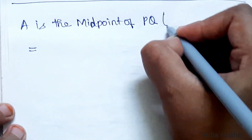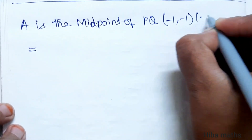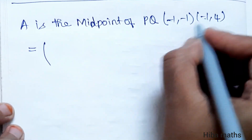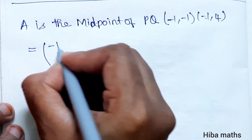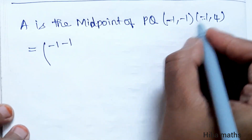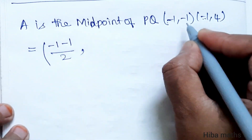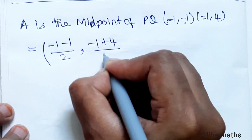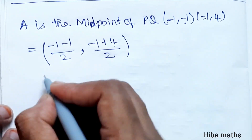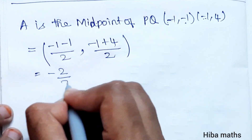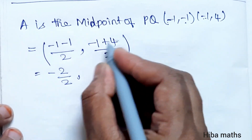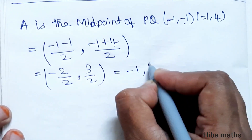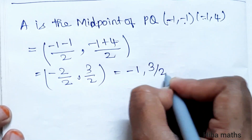PQ: P is (-1, -1) and Q is (-1, 4). Midpoint A = (x1 + x2)/2, (y1 + y2)/2 = (-1 + -1)/2, (-1 + 4)/2 = -2/2, 3/2. So A = (-1, 3/2).